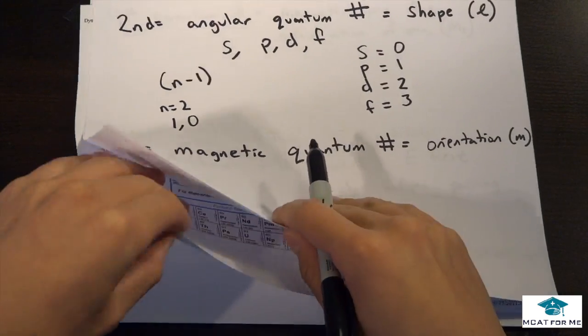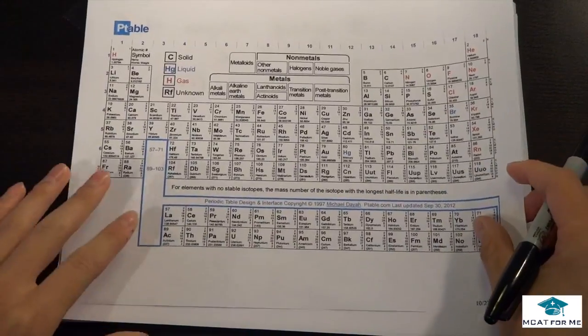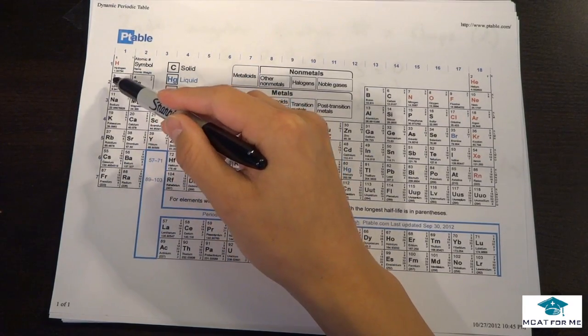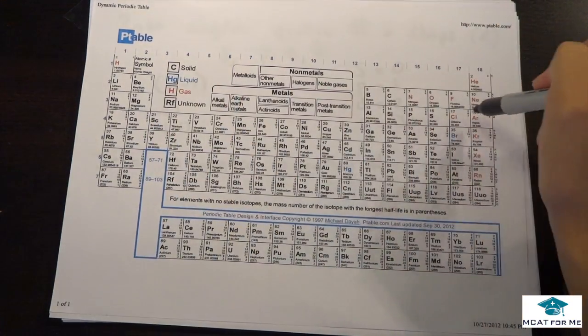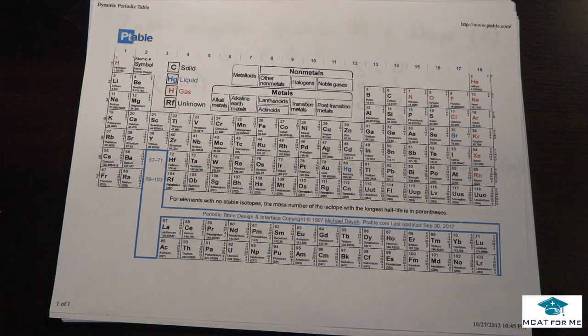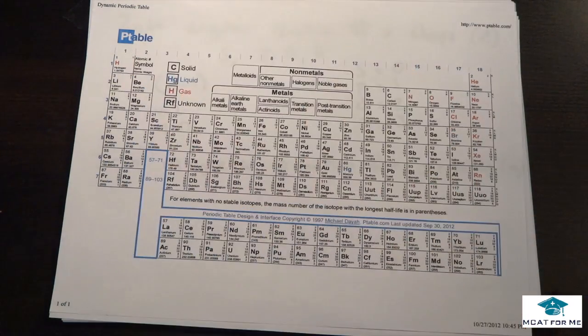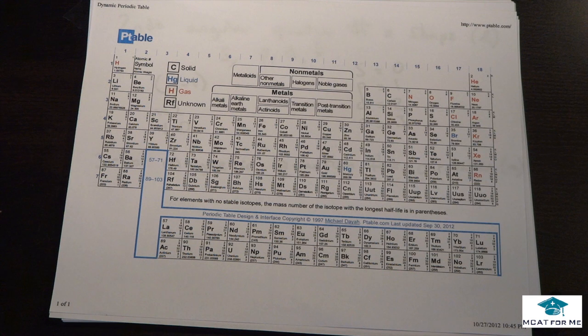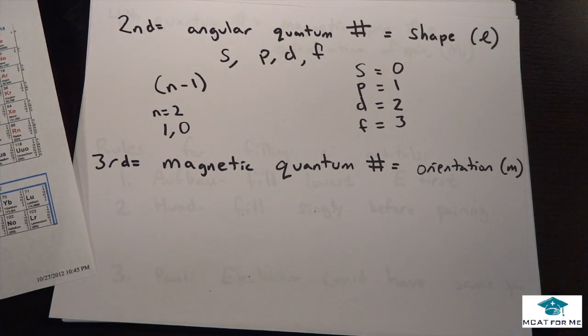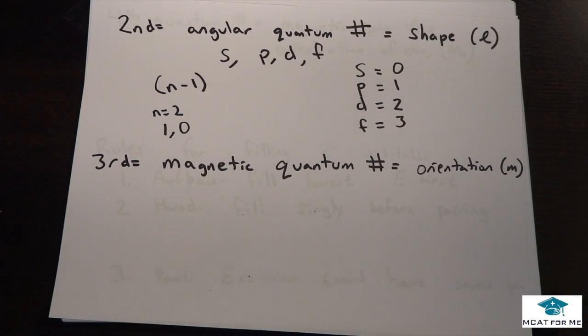And if we look at our periodic table, we can see that's true because in our second period, we can have S orbitals, or we can also have P orbitals. We can't have D orbitals. There is no 2D. There is no 2F. And if we look at 4, that means n minus 1 would be 3. That means we can have S, P, D, or F, right? And that should make sense.